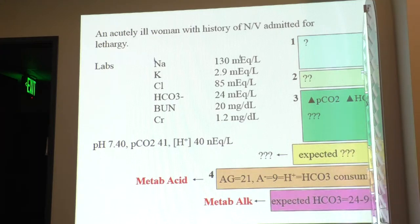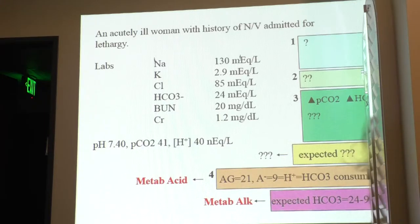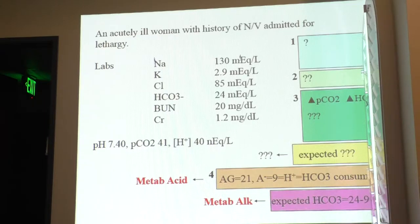A lot of labs, especially in teaching programs, report the anion gap and red flag it. Some community hospitals don't report it — they just give you whatever is there. And you might think the person is fine, but they can very well have sepsis or DKA, unless you use your MUDPILES cheat sheet.